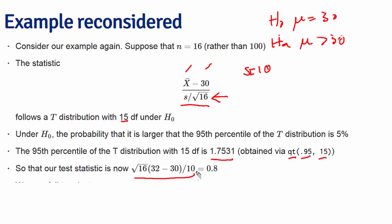Our test statistic, if we actually plug in the 10 and our x-bar of 32, works out to be 0.8. And so we're failing to reject because 0.8 is smaller than 1.75.